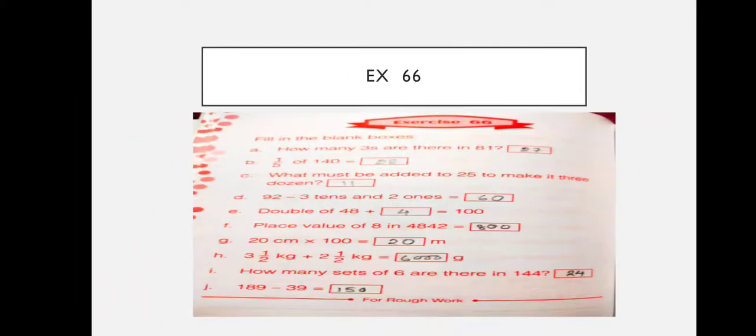Next: what must be added to 25 to make three dozen? Three dozen is 36. So 36 minus 25 equals 11 — therefore we add 11 to 25 to make three dozen.